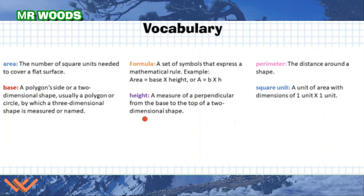Height is a measure of a perpendicular from the base to the top of a two-dimensional shape. Perimeter is the distance around a shape. And then square unit is a unit of area with dimensions of one unit by one unit. It could be one foot by one foot, one meter by one meter, one millimeter by one meter, or an inch by inch.